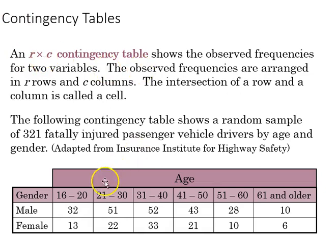We have a row-by-column contingency table, and it shows the observed frequencies for the two variables arranged in the rows and columns, and each intersection is a cell. The following table shows a random sample of 321 fatally injured passenger vehicle drivers by age and gender. We're looking at the overlap of age and gender in this case.